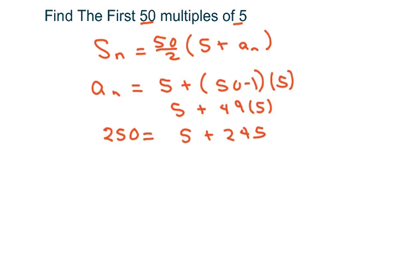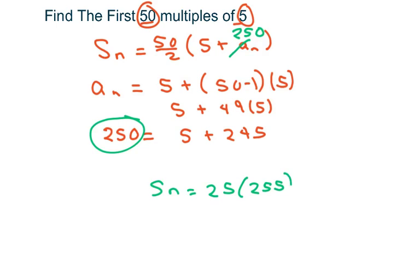Again, you could have just multiplied those two and got that. So we're going to plug this back in 250 into this here. And so we're going to get our sum is 25 times 255. And that gives you 6,375.